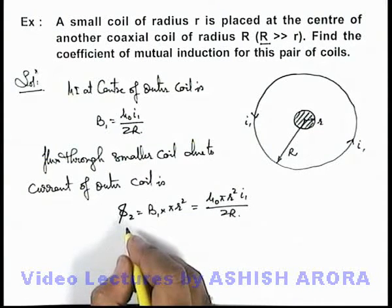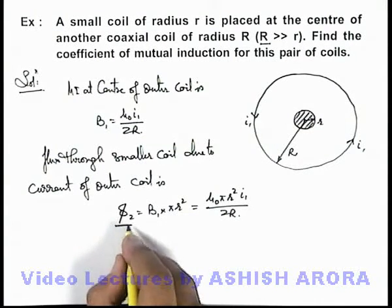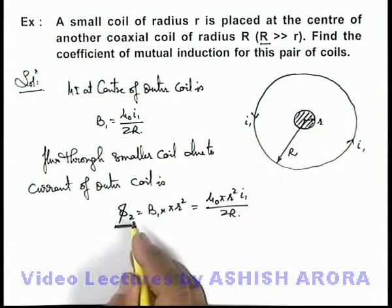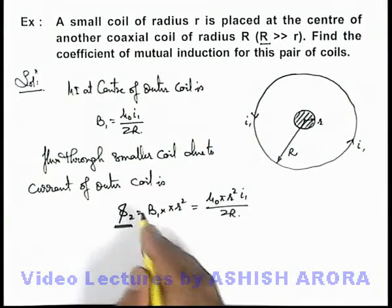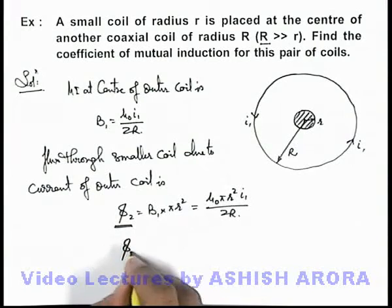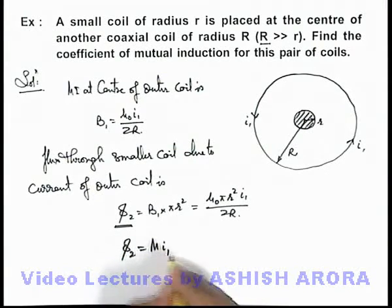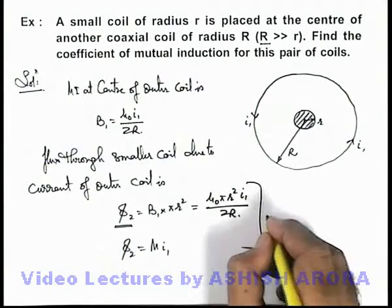And we know that current through one coil if it causes flux passing through the another coil, this can be related by mutual induction as phi-2 equals M i1